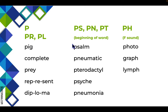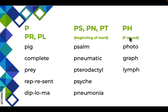At the beginning of a word, if you have P-S, P-N, or P-T, the P is silent, like in 'psalm,' 'pneumatic,' 'pterodactyl,' 'psyche,' or 'pneumonia.' P and H together have the /f/ sound, like in 'photo,' 'graph,' and 'lymph.'